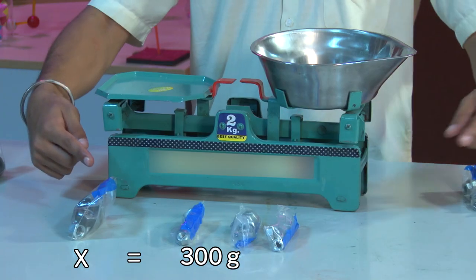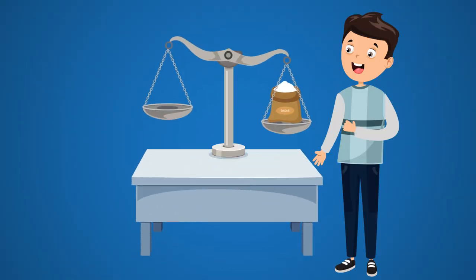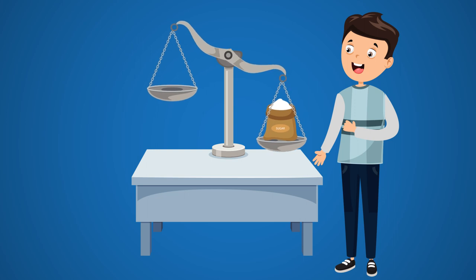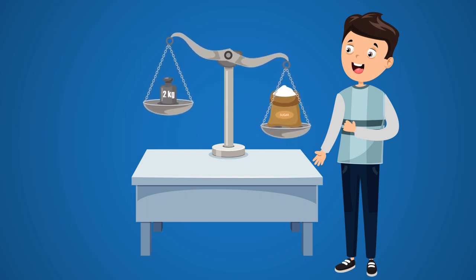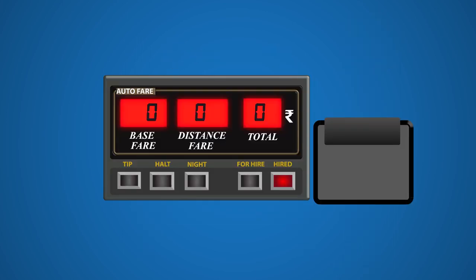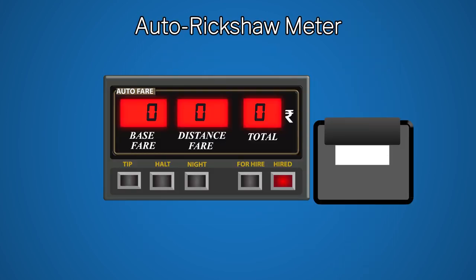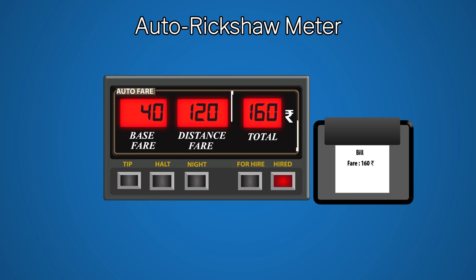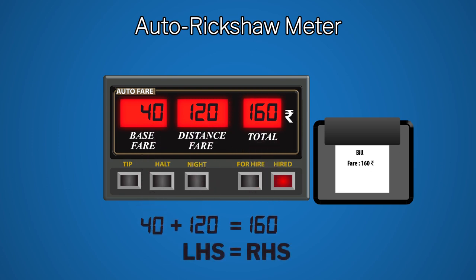Let us see some daily life examples of linear equations in one variable. A shopkeeper tries to put unknown sugar on one side of the weighing balance and known weights on the other side, trying to make the balance equal. While traveling in an auto, we calculate the total fare by adding the base rate to the fare per kilometer, which gives us the total amount we need to pay. Only when both sides of the equation are true can we say our amount is correct. Hope you can now differentiate between equality and inequality and solve linear equations in one variable. Thank you.